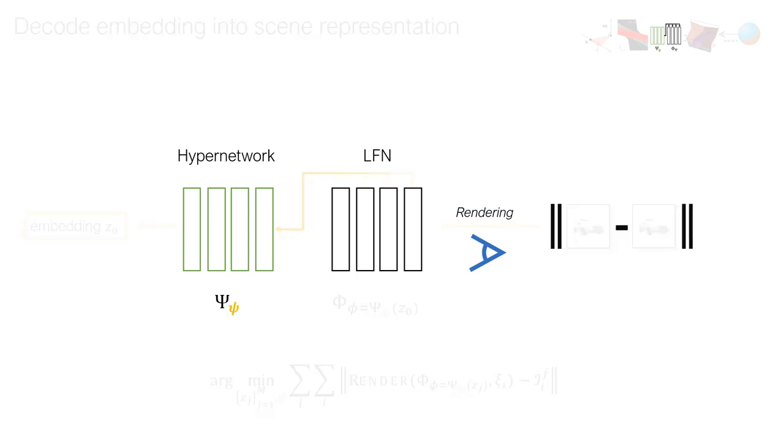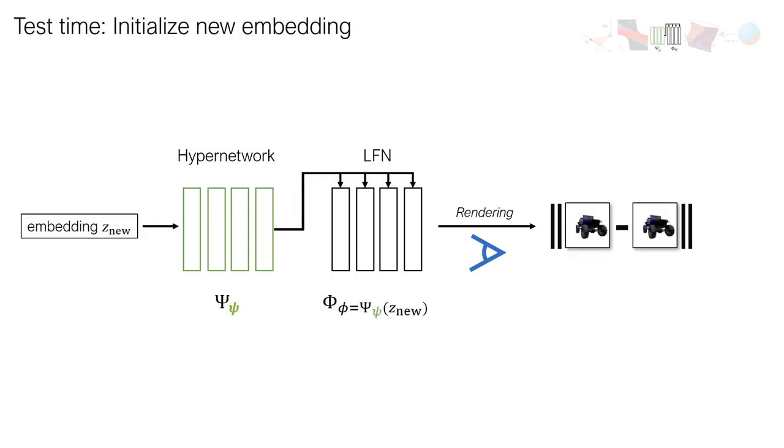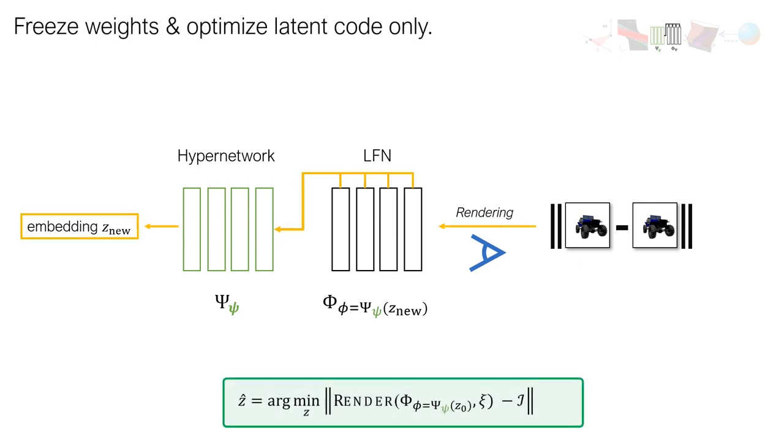To infer the latent code of a new scene, we initialize a new random latent code. The forward pass is identical, but in the backward pass, we freeze the weights of the hypernetwork and only update the latent code. In effect, we have learned a graphics forward model and are only looking for the set of latent variables that best describe the scene under the model.